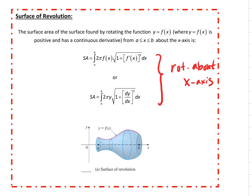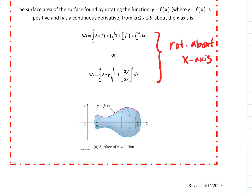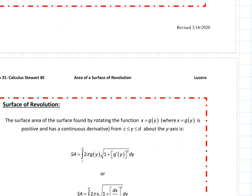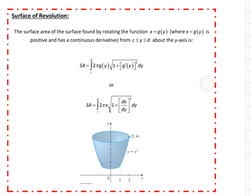We could also rotate around the y-axis. Taking x equals g of y and rotating around the y-axis gives a very similar proof and generates this formula: the surface area of a solid found by rotating x equals g of y — where g of y is positive and has a continuous derivative — defined from c to d, is the integral from c to d of 2π g(y) times the square root of 1 plus g prime of y squared dy. In Leibniz notation: 2πx times the square root of 1 plus (dx/dy)² dy.